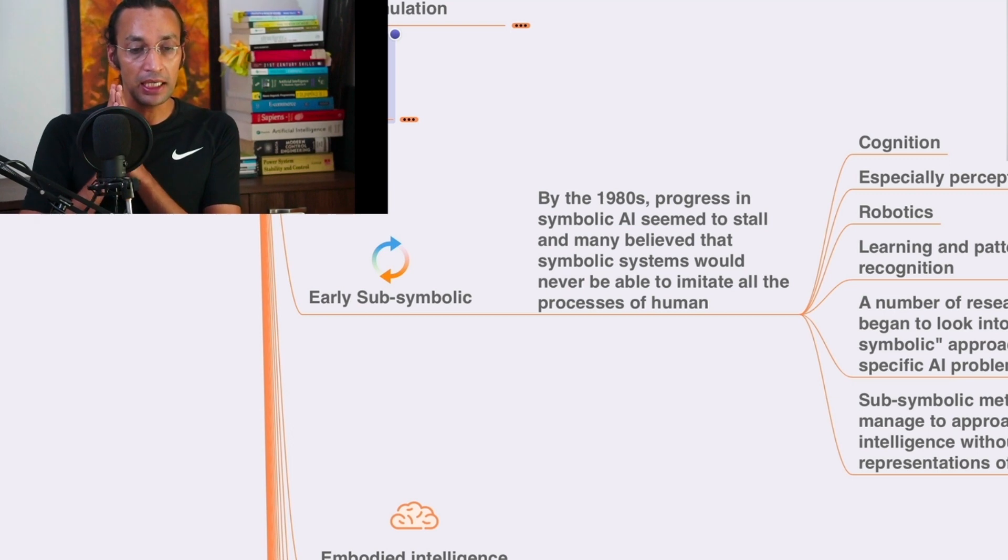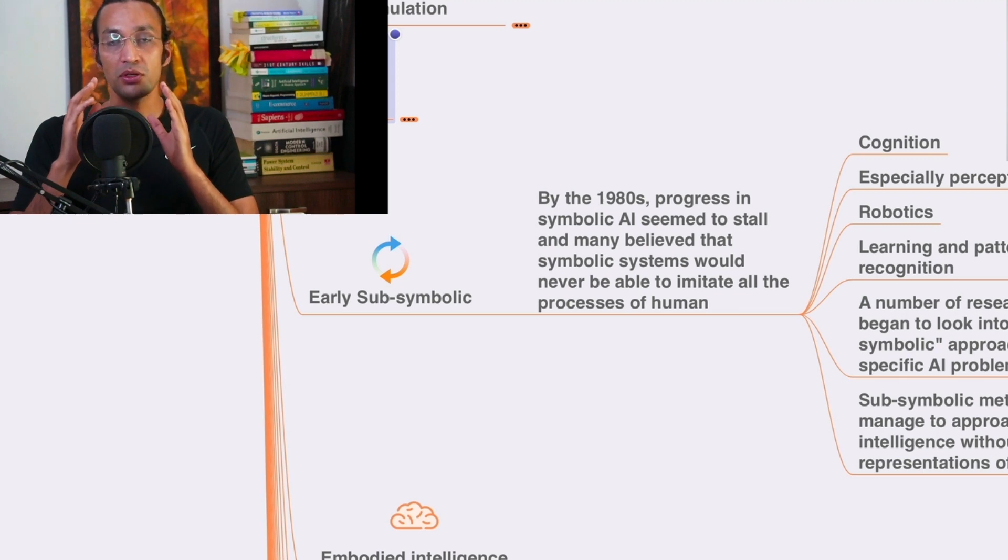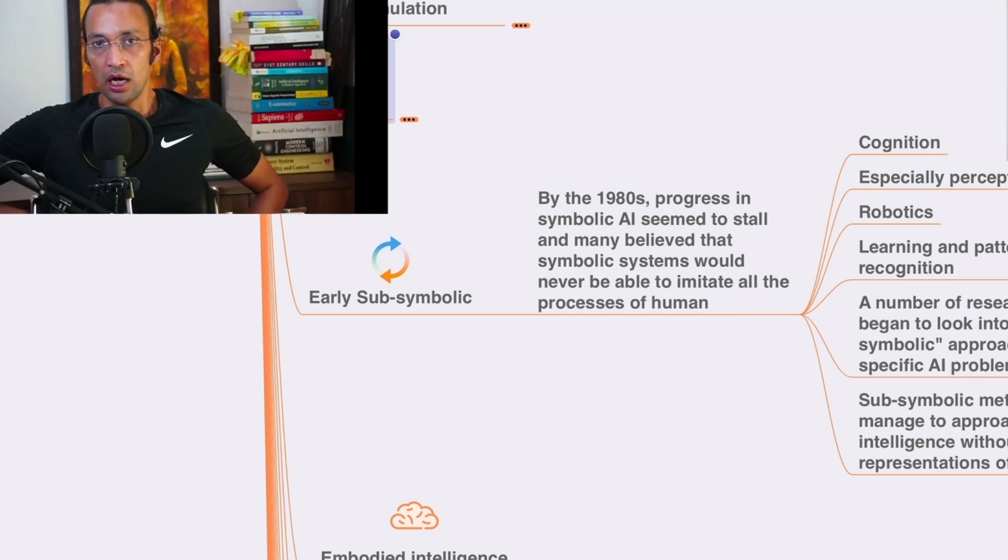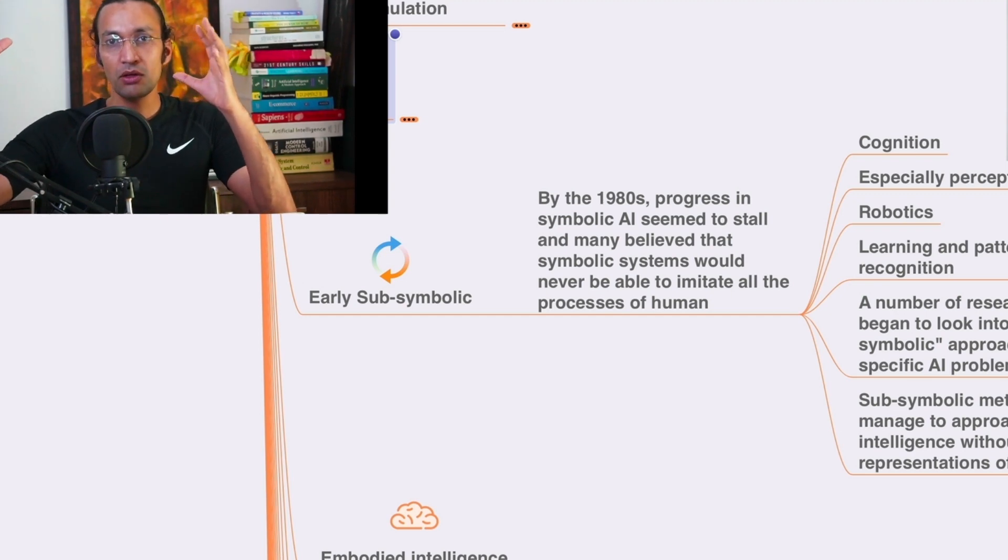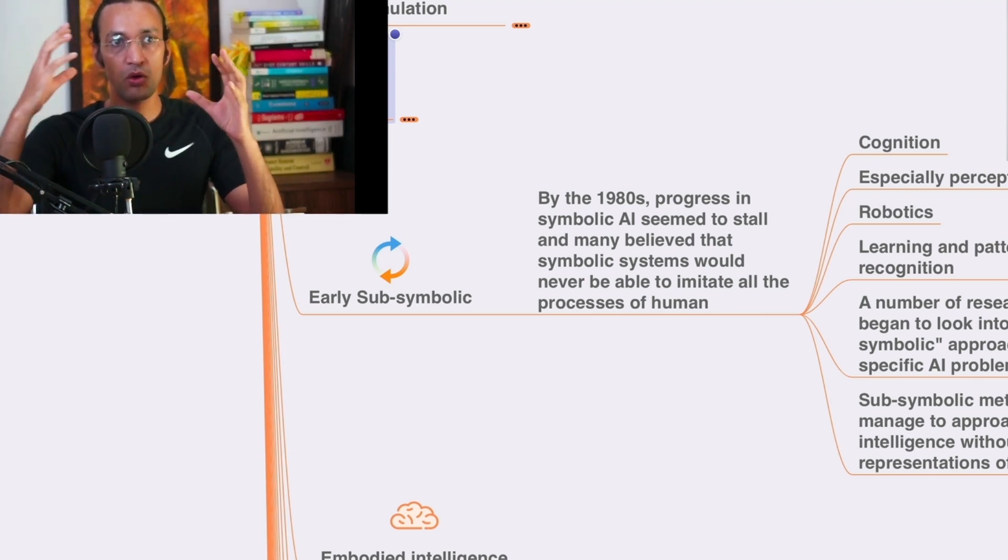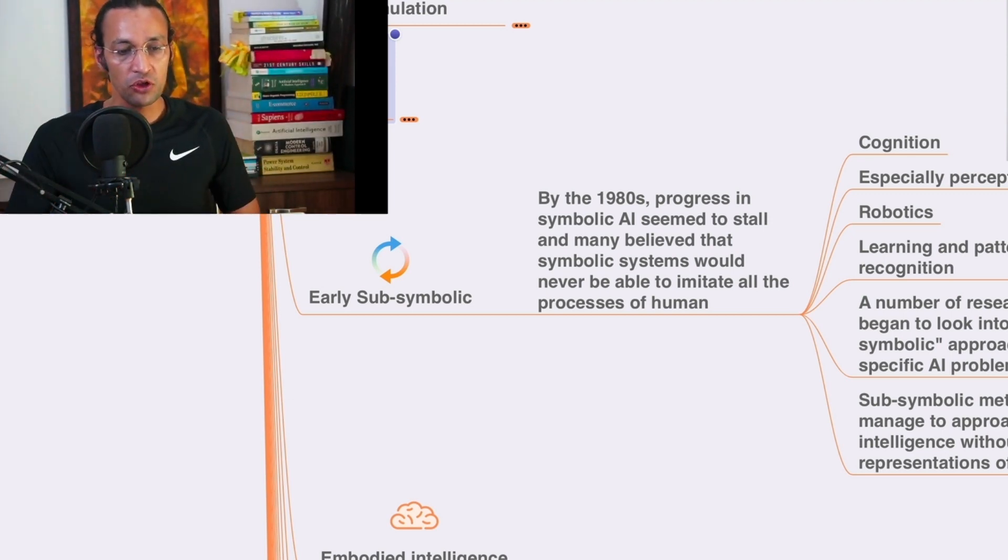By 1980s progress in symbolic AI seemed to stall and many believed that symbolic systems would never be able to imitate all the processes of human beings. Like as we know the definition of AI, AI is like we are mimicking the human behaviors and how we are solving problems, all the approaches, intelligence, human intelligence into machines. At that point of time it seemed they believed that symbolic systems would never be able to imitate human processes.